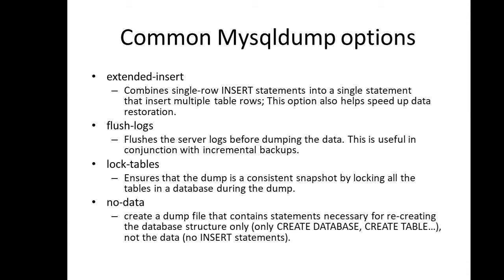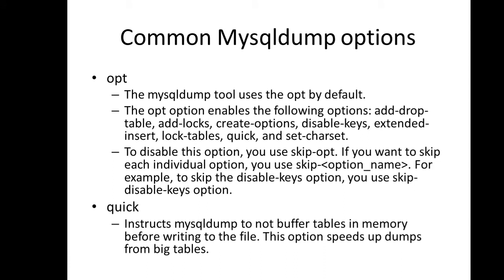The no-data option creates a dump file containing only the statements necessary to recreate the database structure — CREATE DATABASE and CREATE TABLE — with no INSERT statements. This is useful for developers who want to copy a test database structure to production without copying test data. The opt option is enabled by default and enables: add-drop-table, add-locks, create-options, disable-keys, extended-insert, lock-tables, quick, and set-charset. To disable it, use skip-opt.